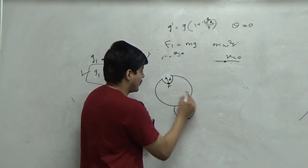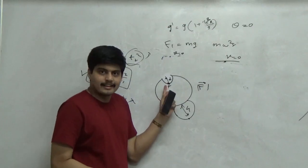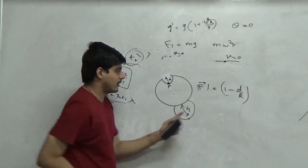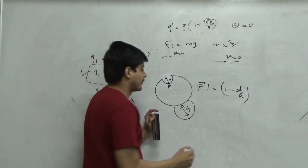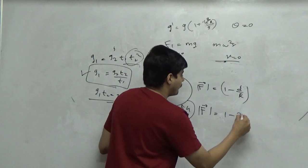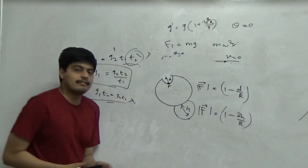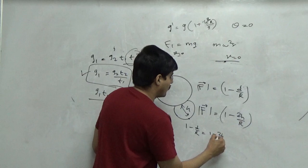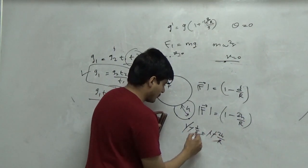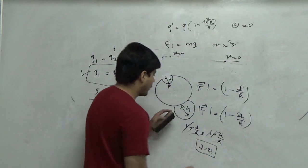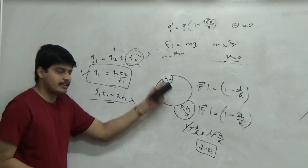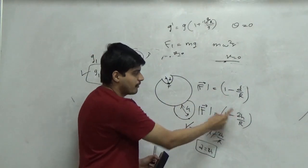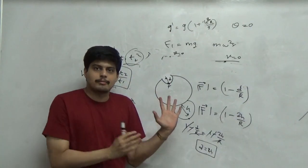The force F bar that in the dip is simply 1 minus d by R. F dash here was approximately 1 minus 2H upon R. These both have to match, which means 1 minus d by R equals 1 minus 2H upon R. You simply get d equal to 2H. So the lump or hump he has to create just to match this is double the size of the depth, simply because gravity scales down linearly but scales up with the constant of 2 as we increase the height.